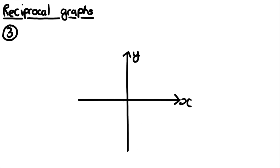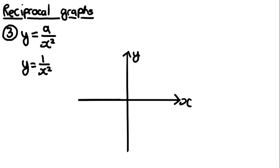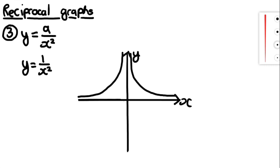The third type of reciprocal graph is in the form y = a/x². For example, y = 1/x². Remember that squaring a negative number gives a positive result, so all the y values will be positive. Both curves will be above the x-axis. Because the negative y values become positive, the graph is just reflected onto the top of the x-axis.